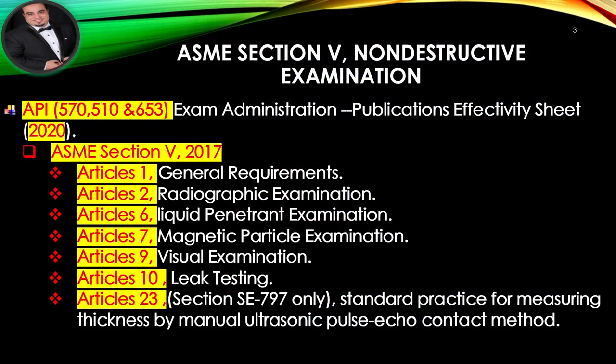As per the API 570, API 510, and API 653 Exam Administration Publications Effectivity Sheet 2020, the applicable edition of ASME Section 5 is 2017. The following articles are applicable to the exam: Article 1 General Requirements, Article 2 Radiographic Examination, Article 6 Liquid Penetrant Examination, Article 7 Magnetic Particle Examination, Article 9 Visual Examination, Article 10 Leak Testing, Article 23, and Section SE-797 — Standard Practice for Measuring Thickness by Manual Ultrasonic Pulse Echo Contact Method.